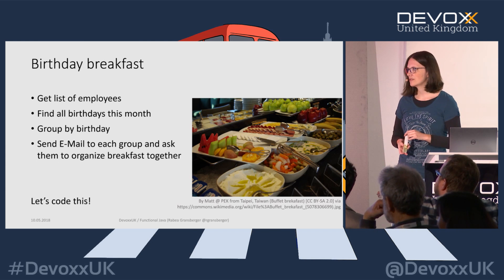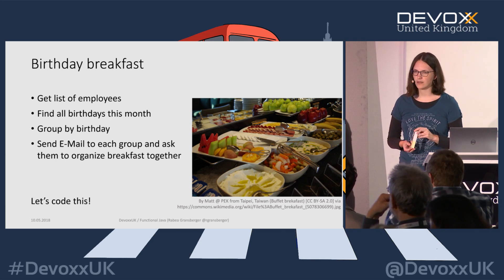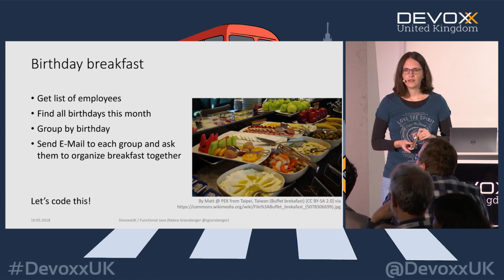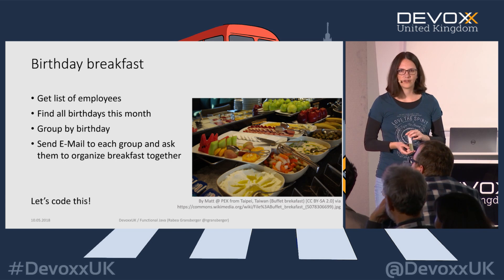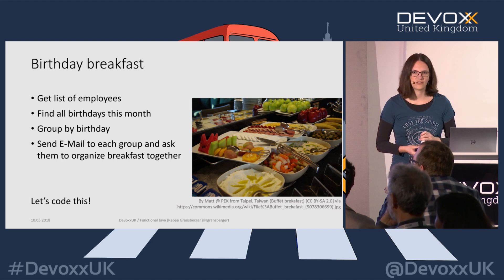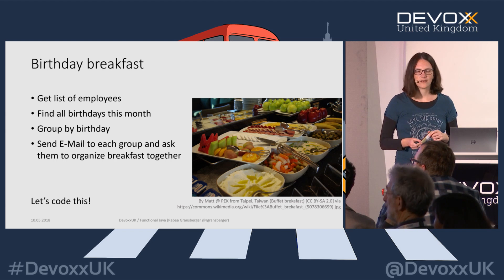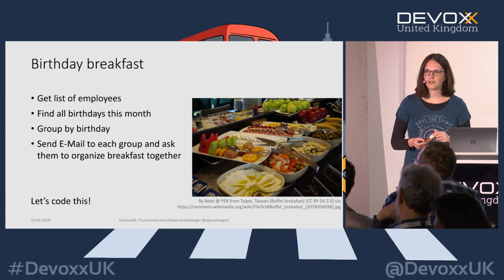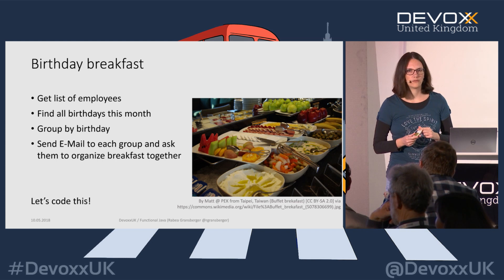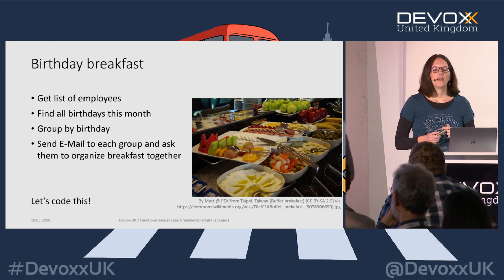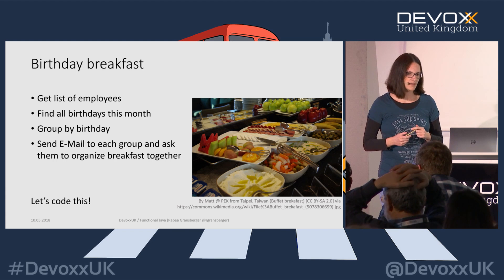My example for today, at least for the first two libraries, will be a birthday breakfast. What we do in our company is: when at least two people have a birthday on the same day or close by, they organize a breakfast for the whole company — otherwise they just bring a cake. It would be nice to have an automated system to remind people to organize a breakfast together if they have a birthday on the same day, going through the whole list of employees, finding who shares a birthday, and sending an email.